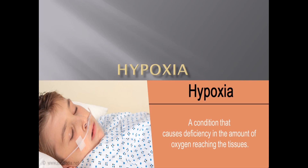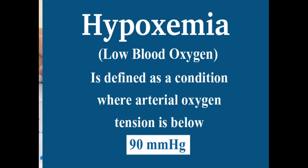Welcome to Interactive Medicine. In this section we talk about hypoxia. 'Hypo' means low and 'oxy' means oxygen — it is the condition that causes deficiency in the amount of oxygen reaching the tissues. Don't confuse it with hypoxemia, which is a lower level of oxygen in the blood. Hypoxemia is defined as a condition where arterial oxygen tension is below 90 mmHg.